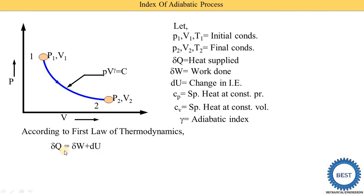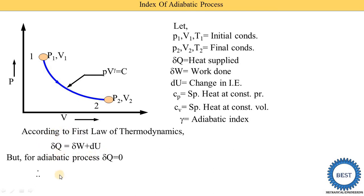According to the first law of thermodynamics, del Q equals del W plus du — meaning heat supply equals work done plus change in internal energy. We already know that for the adiabatic process, the change in heat energy del Q is zero, meaning there is no heat supply and no heat rejection. So del Q equals zero, and putting this into the equation gives us: del W plus du equals zero.